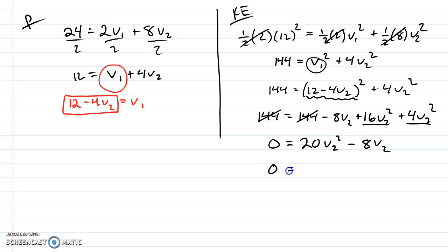And just like last example, I'm going to factor out as much as I can. I can actually divide by 4 and take out a v2. So I have a v2 here minus 2. So I have two answers. v2 could be 0, but we know it's not going to be 0. It's going to actually be the other answer here. So v2 in this case is going to be 2.